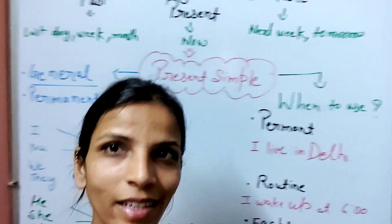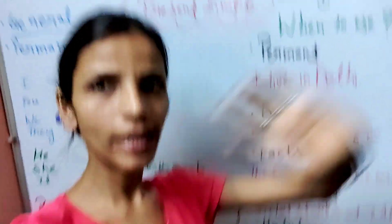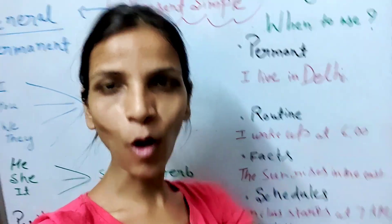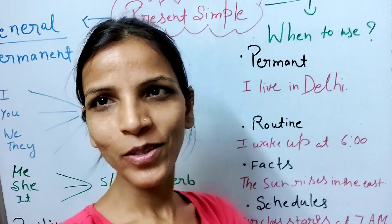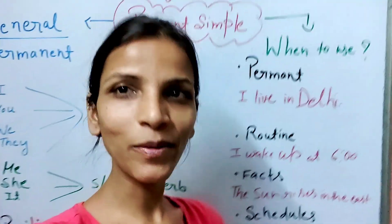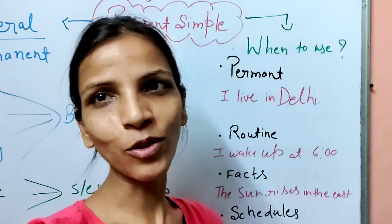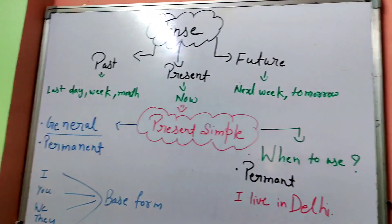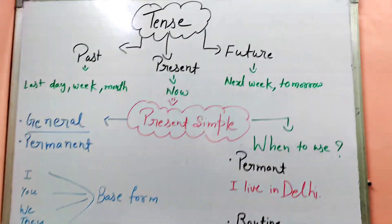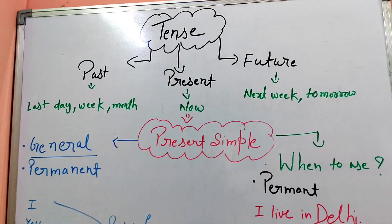Thank you everybody. As I was talking about tense right now — because all the words are opposite. Tense has three parameters: Past, Present, and Future.